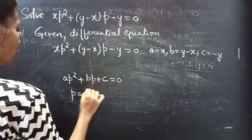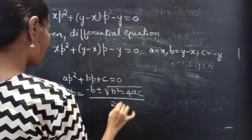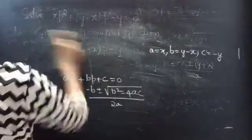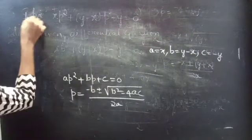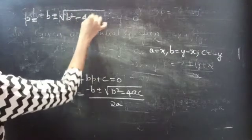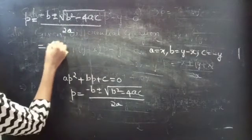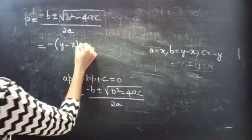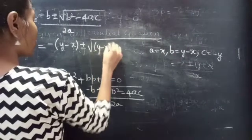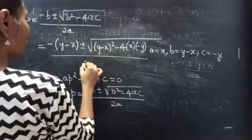From this, I have the quadratic formula: p = [-b ± √(b² - 4ac)] / 2a. Now consider this quadratic formula and substitute the a, b, c values. This equals minus b, that is minus (y - x), plus or minus square root of (y - x)² - 4·x·(-y), all divided by 2x.